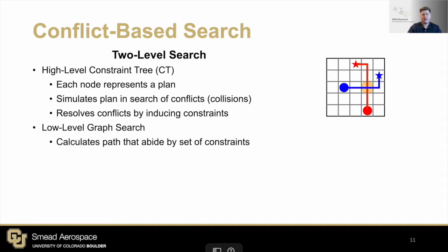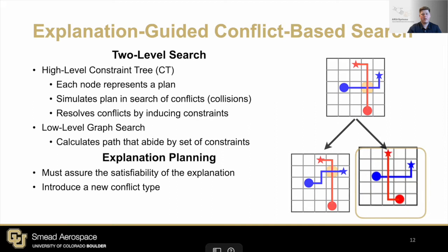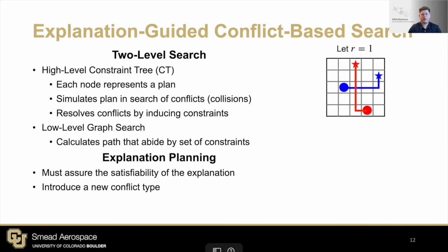For example, if the red and blue agents collide at the highlighted vertex time point, then two children are created: one with the constraint that the blue agent cannot be at that vertex time point, and the other saying that the red agent cannot be there. Each child node uses the low-level search to re-plan for newly constrained agents. This process repeats until a plan without conflicts is found. CBS is a very efficient solver for the classical MAPF problem. However, it is incapable of solving our explainable MAPF problem. For instance, if our new problem required a solution of R equals one, the CBS returned solution would not be correct because the plan requires greater than one segment to explain.